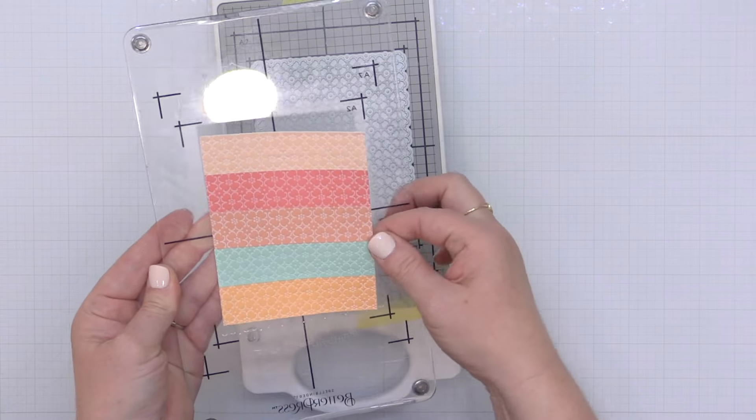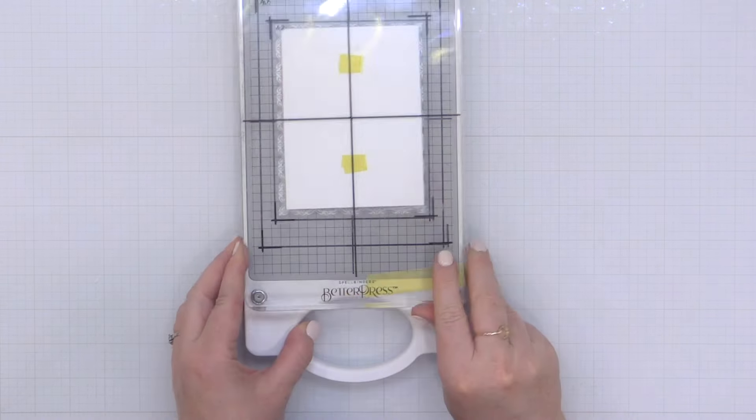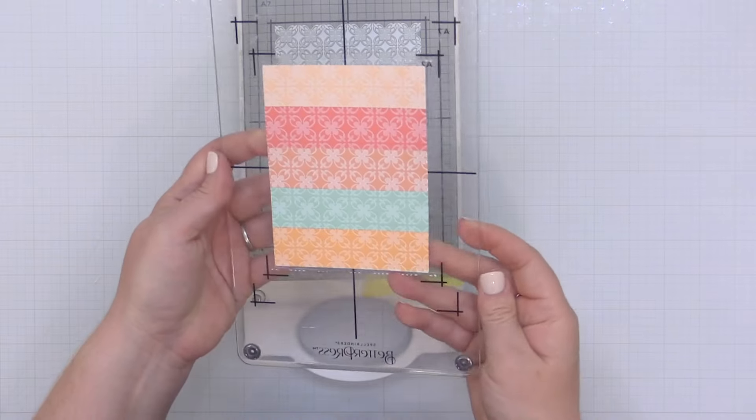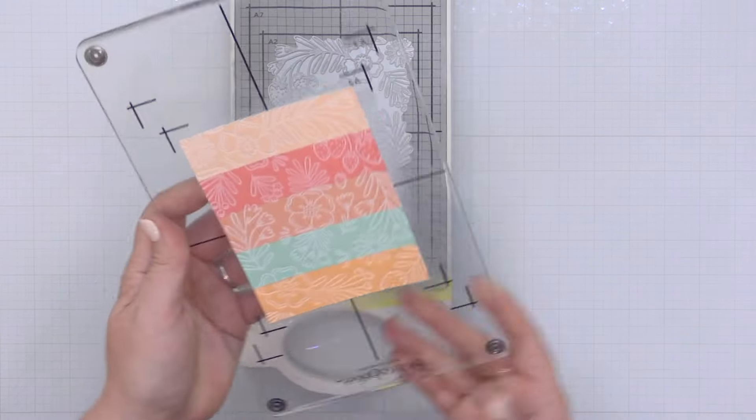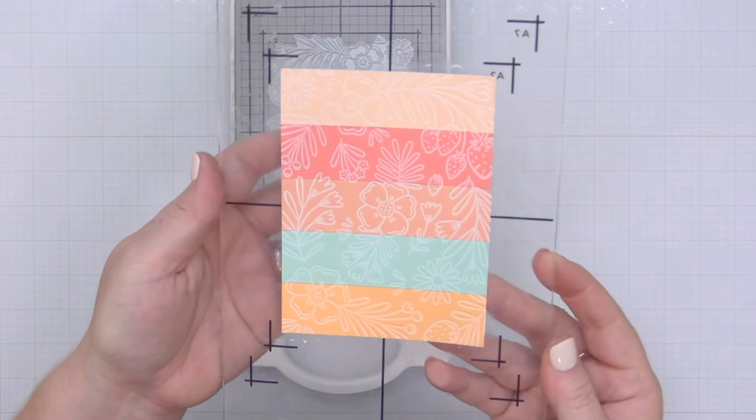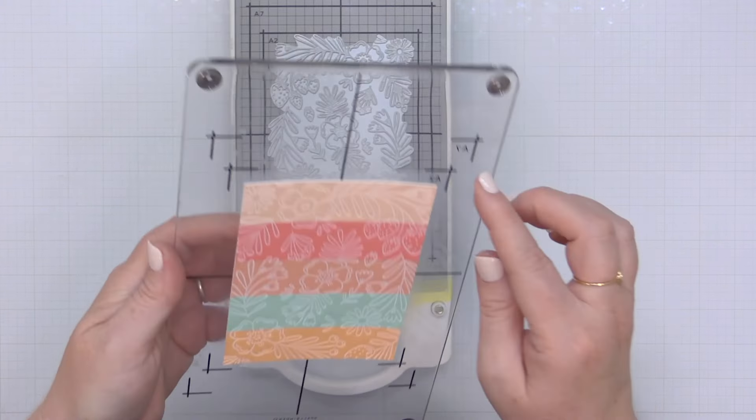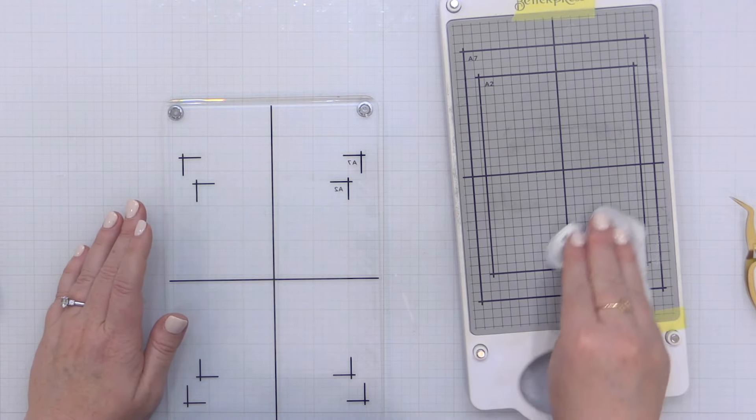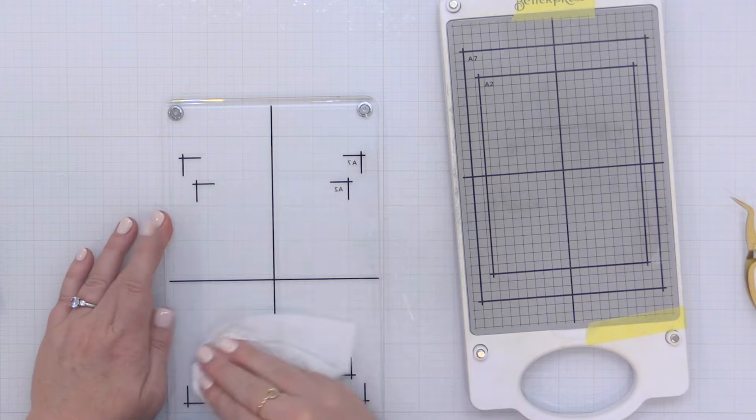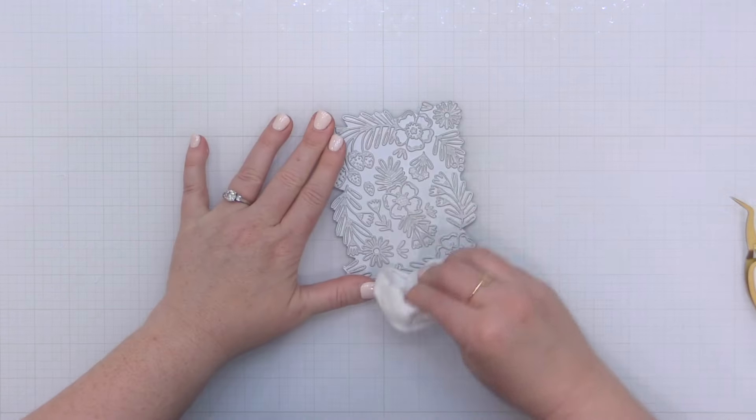Now I'm going to repeat this process with two more press plates. I use the Ornate Trellis press plate background which does have a coordinating die by the way and also the Berries and Blossoms press plate background which also has a coordinating die.